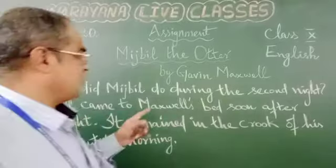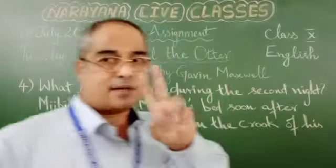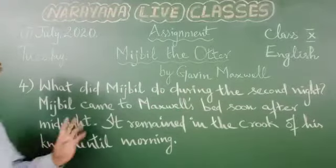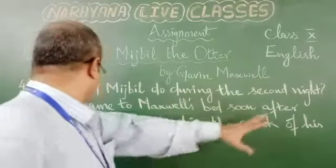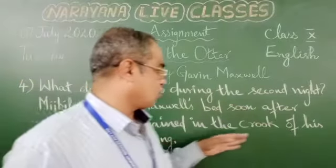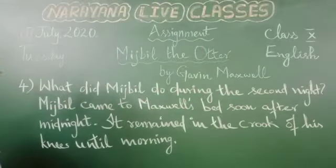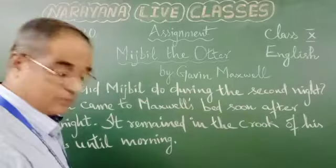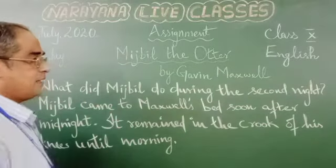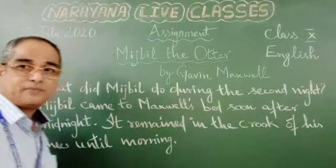What did Midge Bill do during the second day? Midge Bill came to Maxwell's bed soon after midnight. He remained near the crew of his knees until morning. So, one day he was avoiding him, but the second day he came near him.